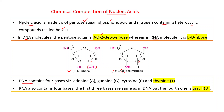DNA contains four bases: adenine (A), guanine (G), cytosine (C), and thymine (T). RNA also contains four bases; the first three — adenine, guanine, and cytosine — are the same as in DNA, but the fourth one is uracil (U). That is, in place of thymine, uracil is present in RNA.